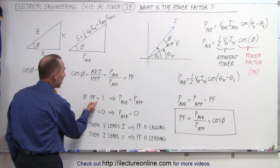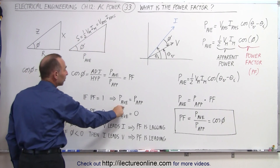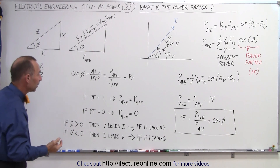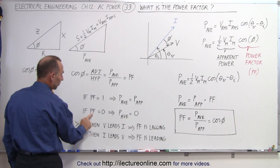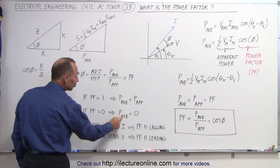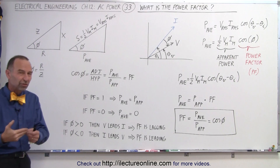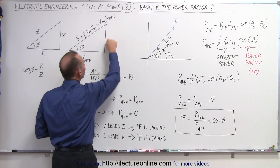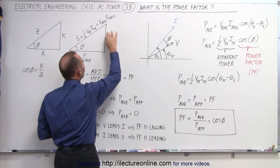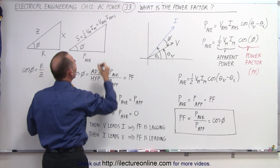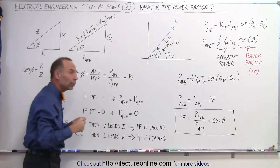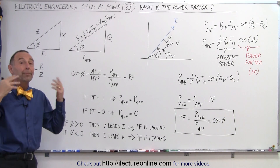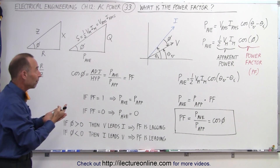If the power factor is 1 and the phase angle is 0, then P_average equals P_apparent. But if the phase angle is equal to 90 degrees such that the power factor is 0, then the average power consumed is equal to zero — there's no resistive portion to the load, only a reactive portion. This vertical distance here we call Q, the reactive power — the power temporarily consumed by the inductor or by the capacitor.